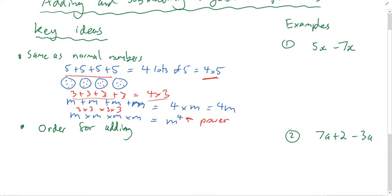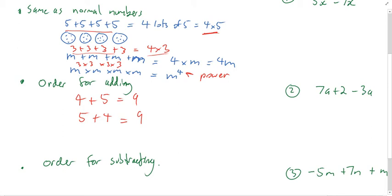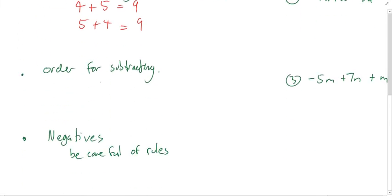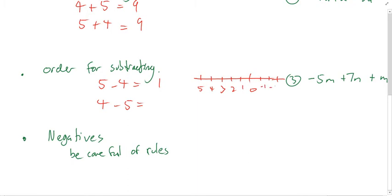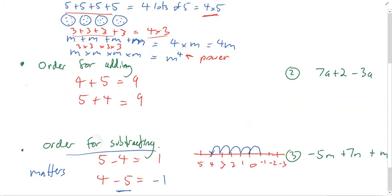Powers get big really fast — three times three times three times three times three: three times three is nine, times three is 27, times three is 81. It grows very quickly, that's why it's called a power — much more powerful than just adding. Also, for addition the order doesn't matter: four plus five equals five plus four equals nine. But for subtraction, order matters: five minus four is one, but four minus five is negative one.